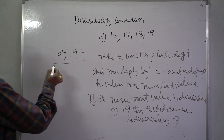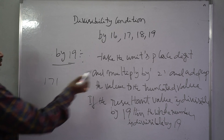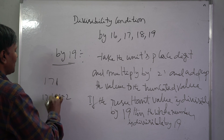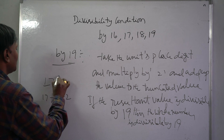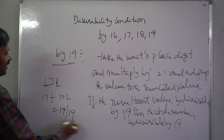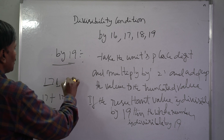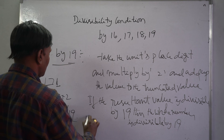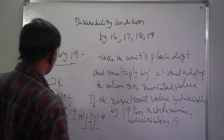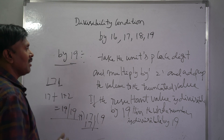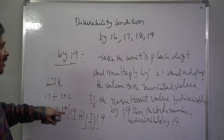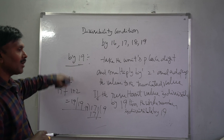Let's check it. Take the small number 171. The condition: take the units digit, 1, multiply by 2 giving 2, and add to the truncated value 17. So 17 plus 2 is 19. We know that 19 is divisible by 19, so 171 is always divisible by 19. If you get a bigger number, you can check it by repeating the procedure till you get the small number. If that resultant value is divisible by 19, then the whole number is divisible by 19.